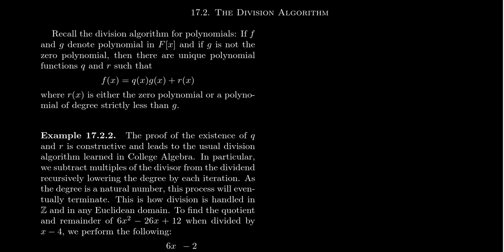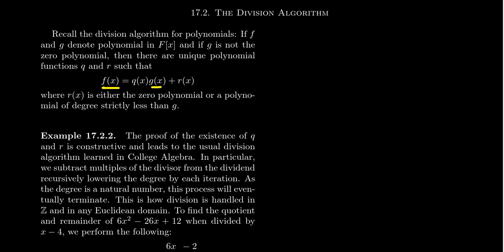Let's be explicit about the algorithm now instead of the more proof-oriented approach. Take two polynomials f and g which belong to our polynomial ring F adjoined x, where F is a field, and suppose that g is not the zero polynomial — otherwise we couldn't divide by it. We proved that given f and g, there exist unique polynomials q and r satisfying f(x) = q(x)·g(x) + r(x), where r is either the zero polynomial or has degree strictly less than g. When we proved that F[x] is a Euclidean domain, we argued that the degree function was the Euclidean norm, and in doing so we recursively constructed these polynomials q and r.